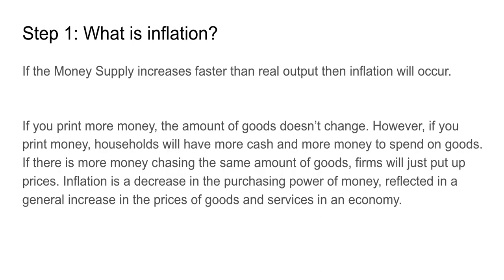Step one: what is inflation? If the money supply increases faster than real output, then inflation will occur. If you print more money, the amount of goods doesn't change. However, if you print money, households will have more cash and more money to spend on goods. If there is more money chasing the same amount of goods, firms will just put up prices. Inflation is a decrease in the purchasing power of money, reflected in a general increase in the prices of goods and services in an economy.